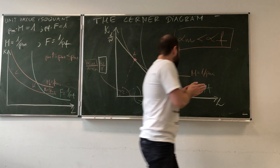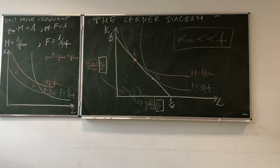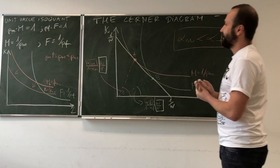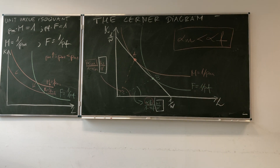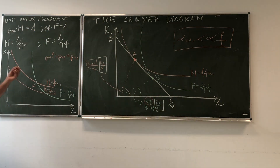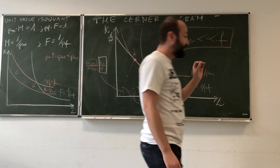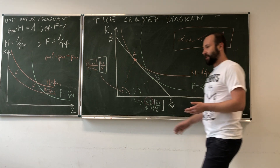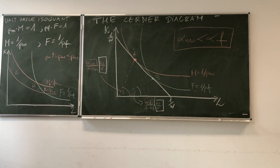We will use the Lerner diagram to show some finer points associated with the neoclassical model of trade. In the next video, we will move to some propositions that we have discussed previously and start deriving them in detail from what we have already put in the model. Specifically, we are going to deal with the factor price equalization proposition.